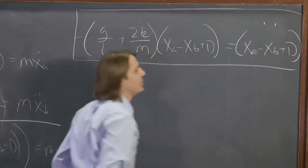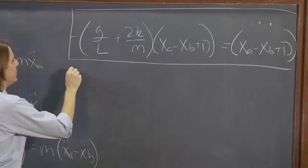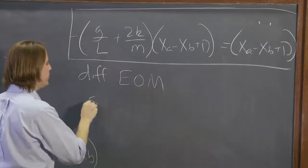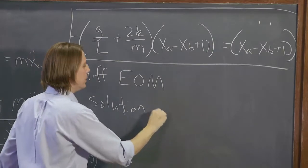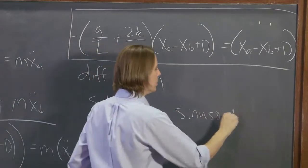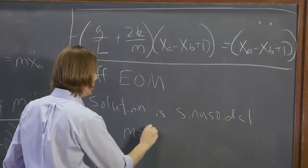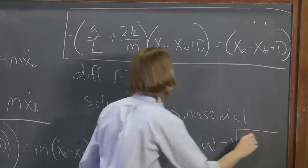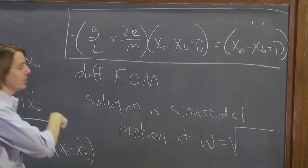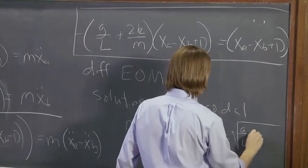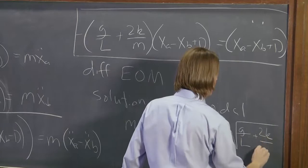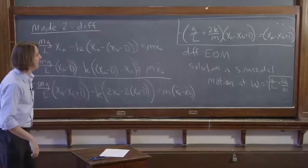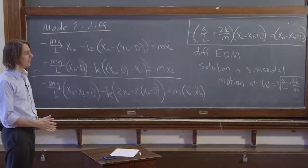And we have been taught that when we see that equation of motion, we know what it means. We know that the solution is sinusoidal motion at omega equals the square root, in this case, g over L plus 2k over m. So it's saying that it goes a little faster. Well, let's see if that's true.